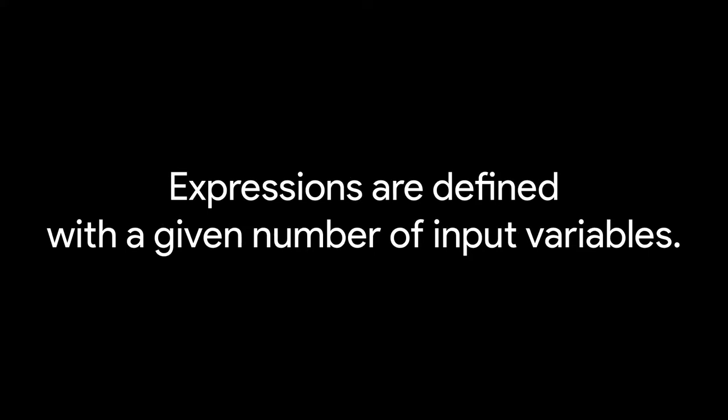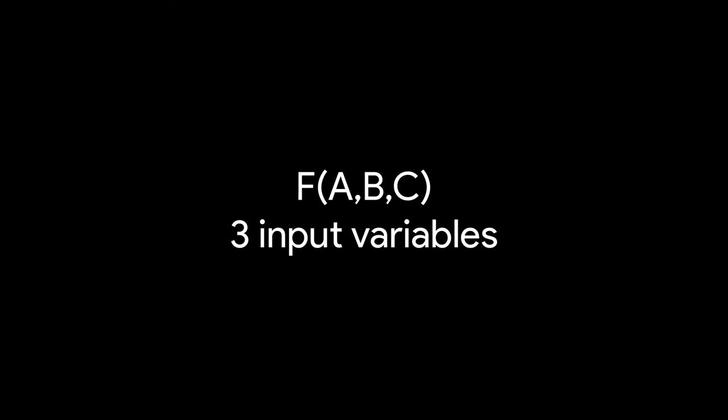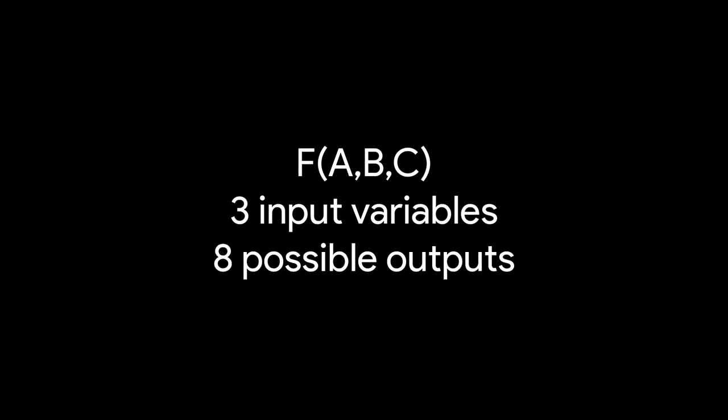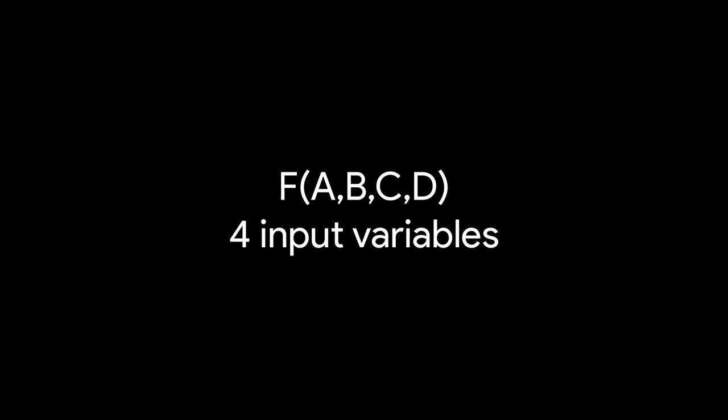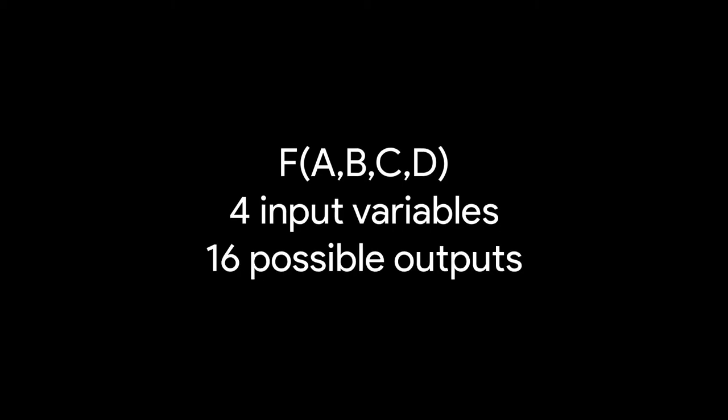The first thing to notice in a min-term or max-term expression is that the function is defined with a certain number of input variables. A function of a, b, and c has three input variables and, therefore, eight possible outputs. A function of a, b, c, and d has four input variables and 16 outputs.